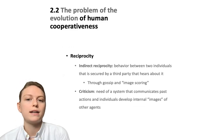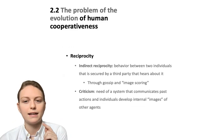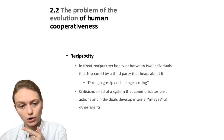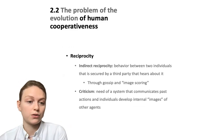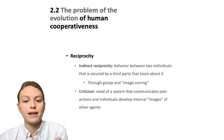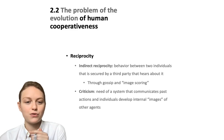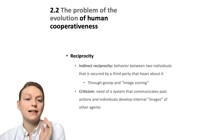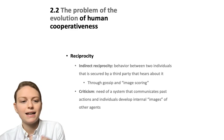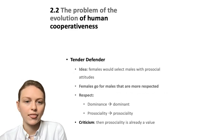Then there's indirect reciprocity, which is when a behavior between two individuals is secured by a third party that hears about it — through gossip or image scoring. Two individuals interact, and then one tells another whether that individual was cooperative or not. But you can see that this already requires a system that communicates past actions and that individuals are able to develop an internal image of other agents. So if we're talking about how cooperation emerged, indirect reciprocity is not a good enough explanation.